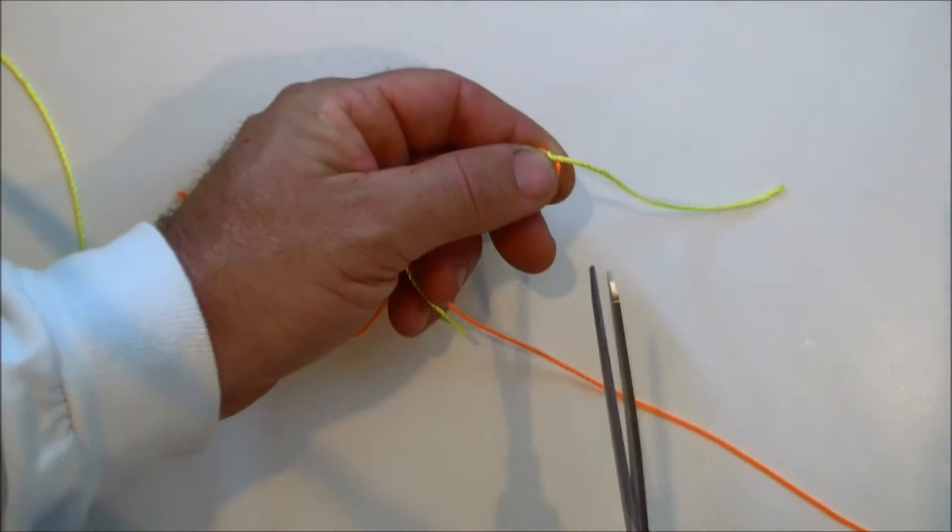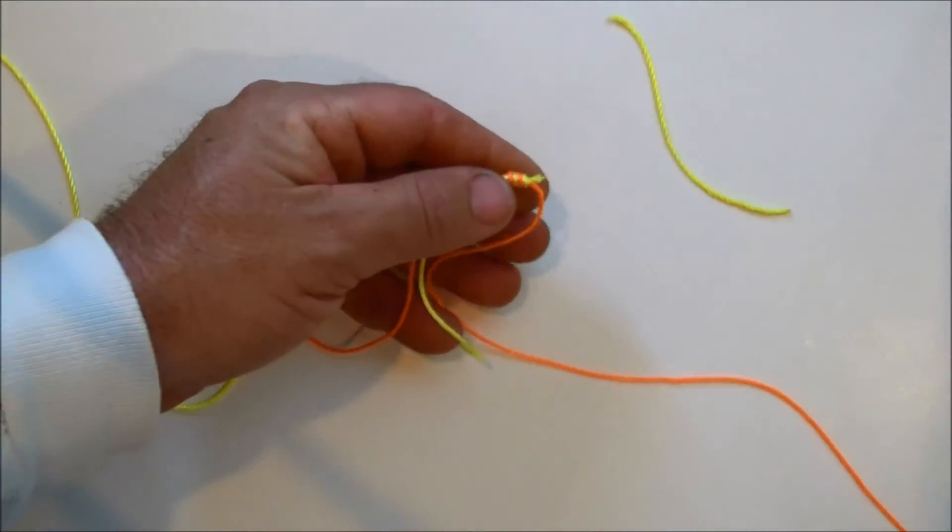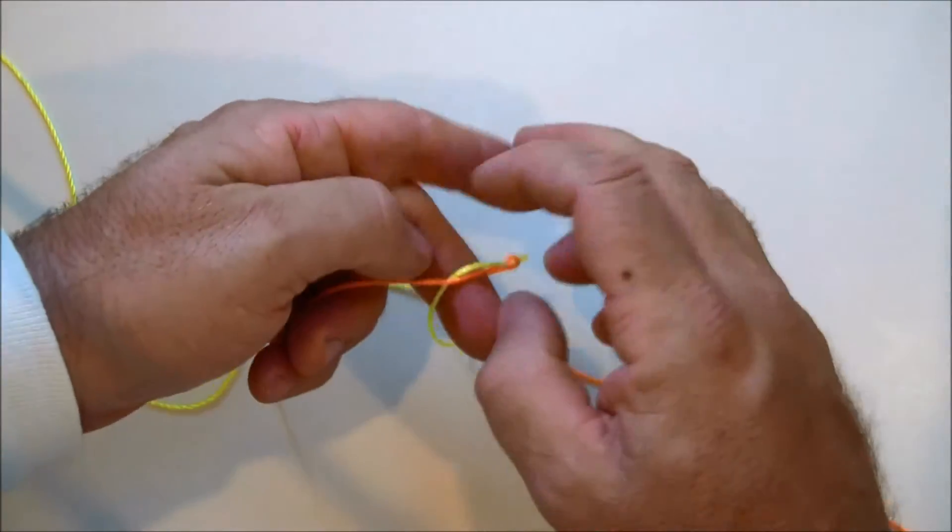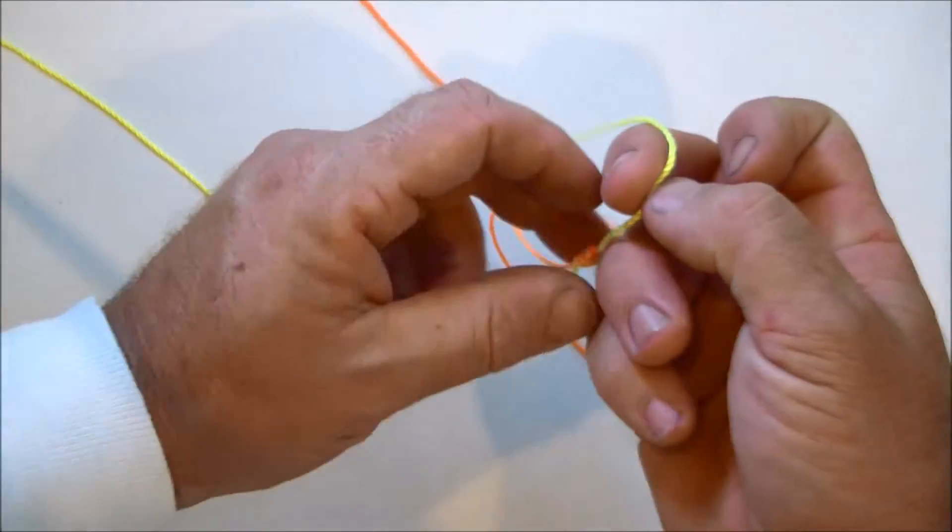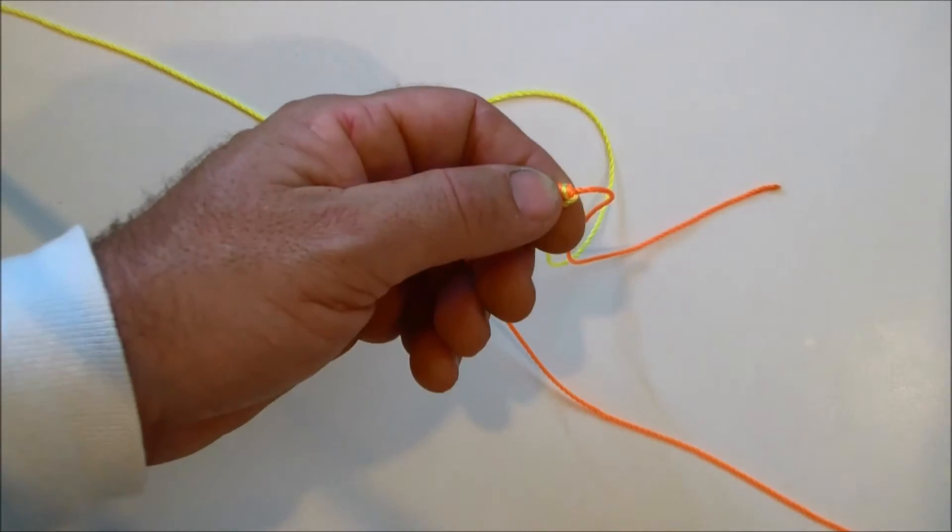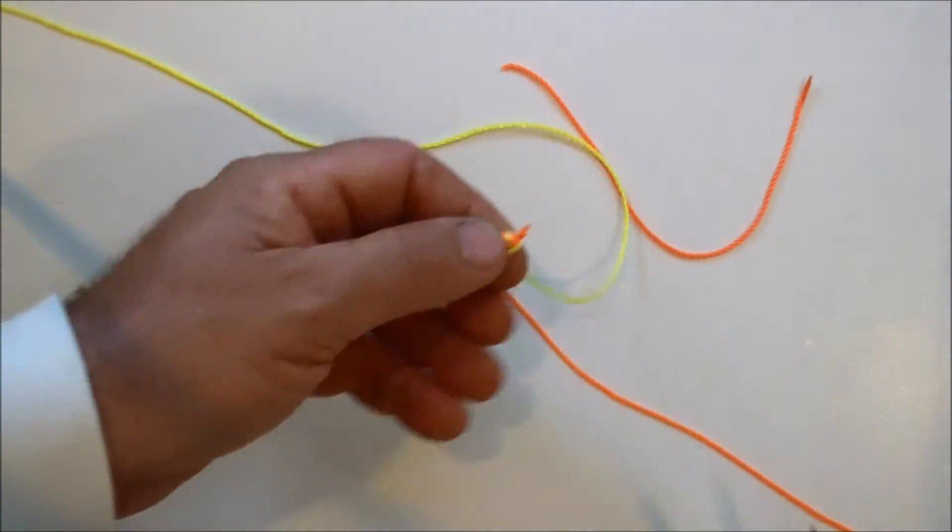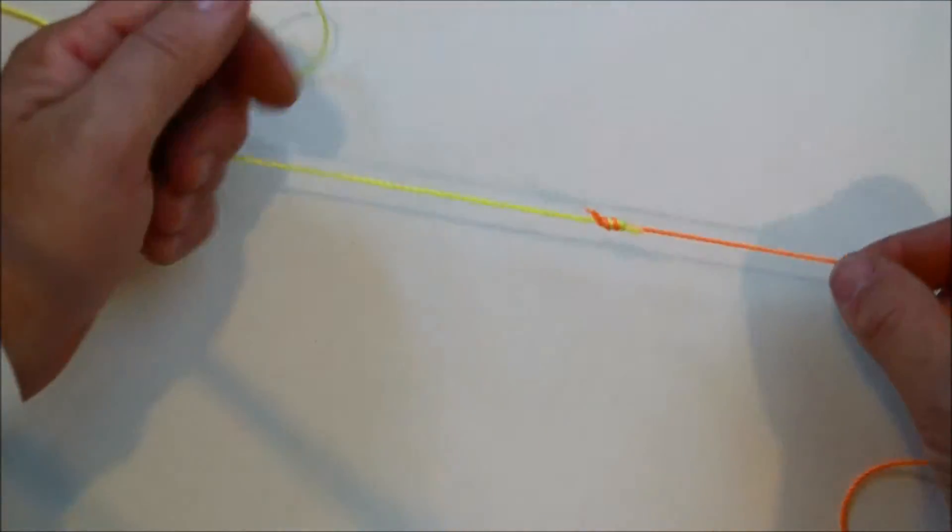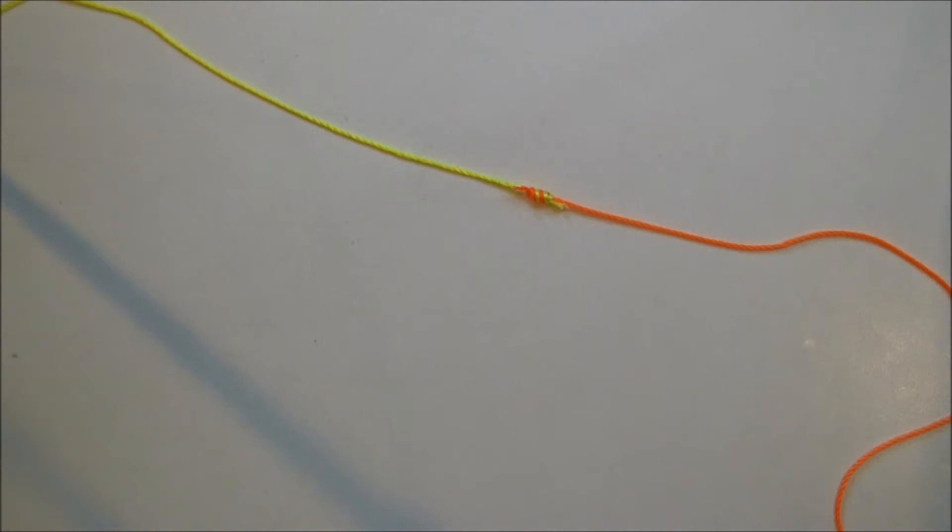You're just going to take scissors and cut your tag ends off there. Clean it up a little bit. You can see how fast and easy that is, and it's a strong knot. I recommend it.